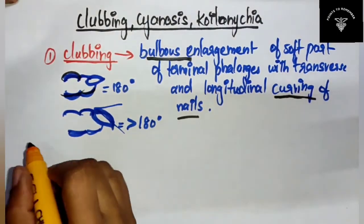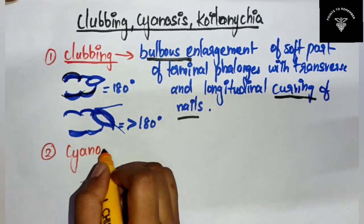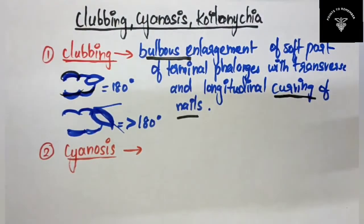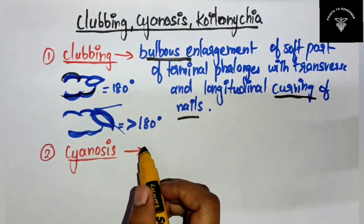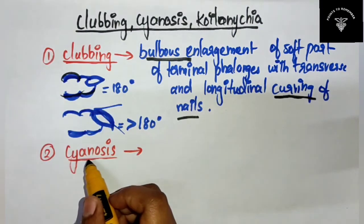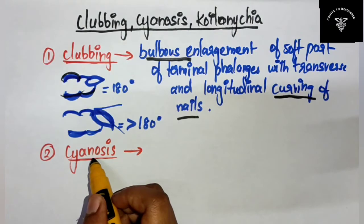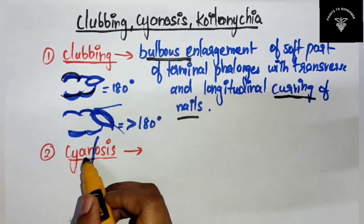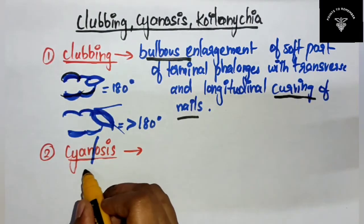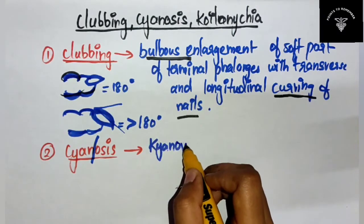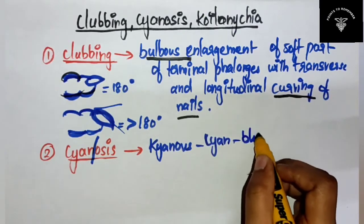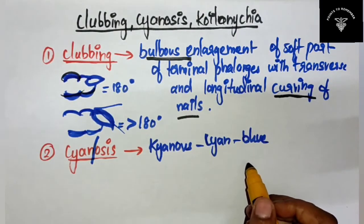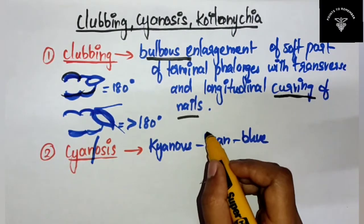The next important term we are going to see is cyanosis. Students often get confused with clubbing, cyanosis, and koilonychia, so I'm here to explain the differences. From the name itself — cyanosis is derived from the Greek word 'kyanos', which means blue color.